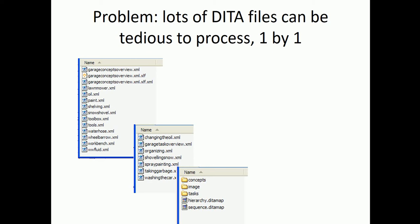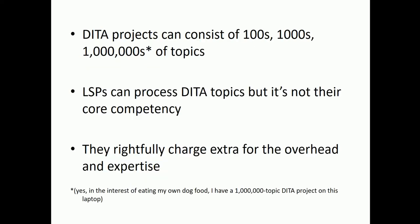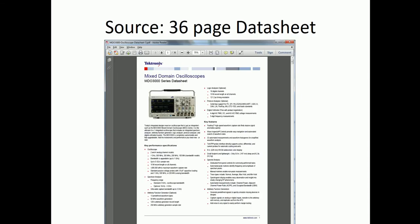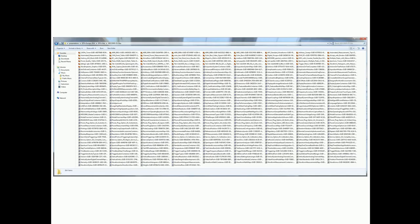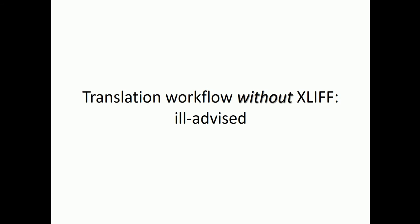Looking at an example we've used several times in class, we see a couple of maps, a bunch of images, and a bunch of topics — and processing those one by one takes a lot of energy. DITA projects can consist of hundreds, thousands, or millions of topics. A localization service provider can process these topics, but it's not their core competency, and they would rightfully charge extra for the overhead. Our go-to data sheet example is 36 pages, 32 DITA maps, 283 DITA topics, and 46 images — that's a ton of files.